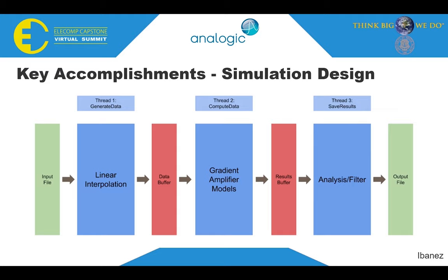The simulation is designed using three threads of control, created using C++'s standard library for threads to ensure wide compatibility, that each take on a part of the workload. The threads communicate with each other using buffers that act as critical regions, using mutexes to handle the locking of resources and conditional variables to notify each other when any updates are made during a simulation, such as shutdown or a buffer receiving new information. One thread handles the reading and passing of data from the input file, the next handles performing the electrical or thermal model of the gradient amplifier, and the last writes the results of the computations to an output file.